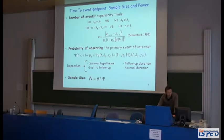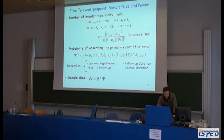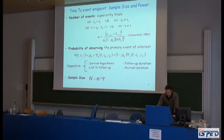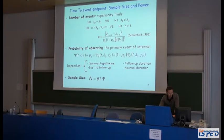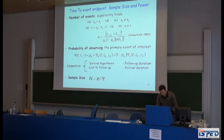The expected number of events depends on the power of the study, alpha, the probability of being randomized to the experimental arm, and the expected hazard ratio. The number of patients needed to observe the required number of events depends on the probability of observing the event of interest, which is determined by actual follow-up time, risk of failure in each arm, duration of the trial, and the dropout rate. The sample size is given by the ratio of the number of events to the probability of observing the failure.